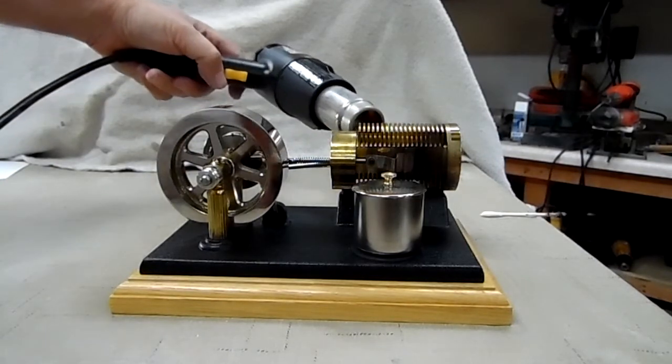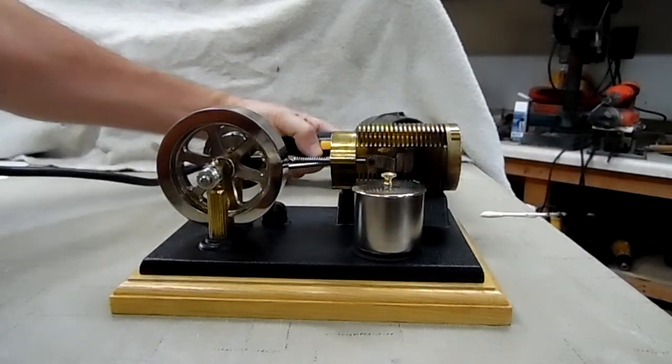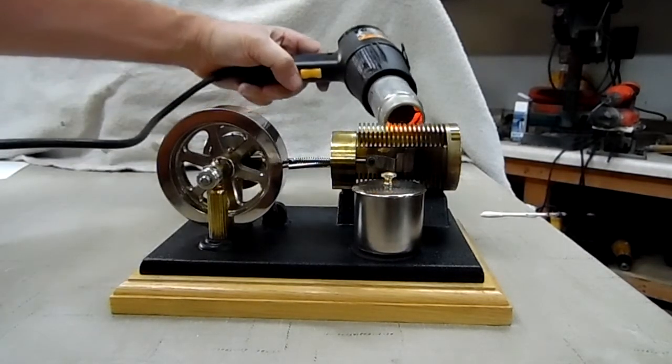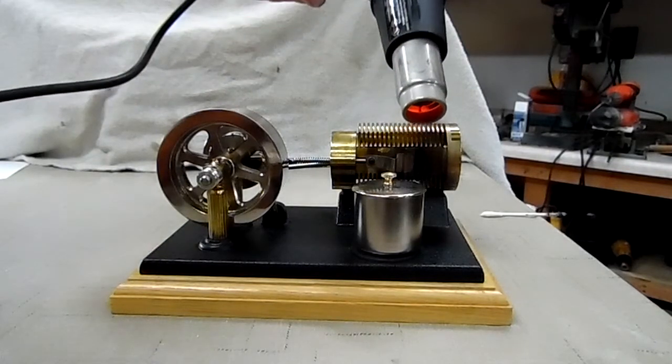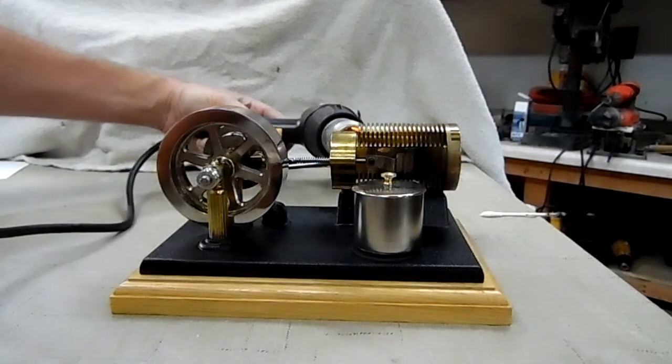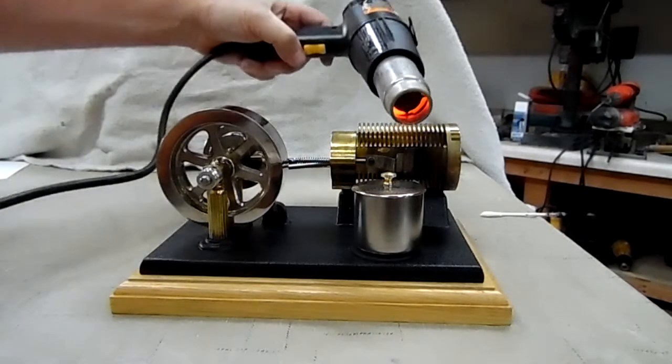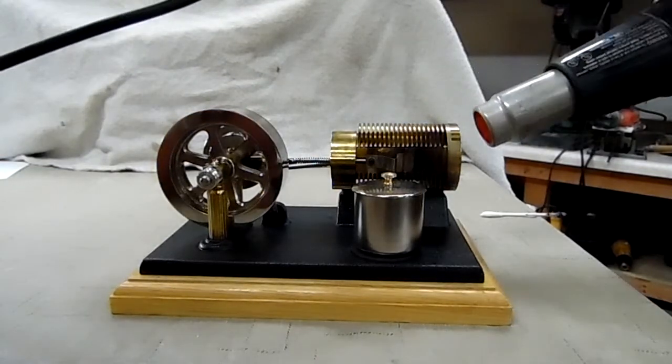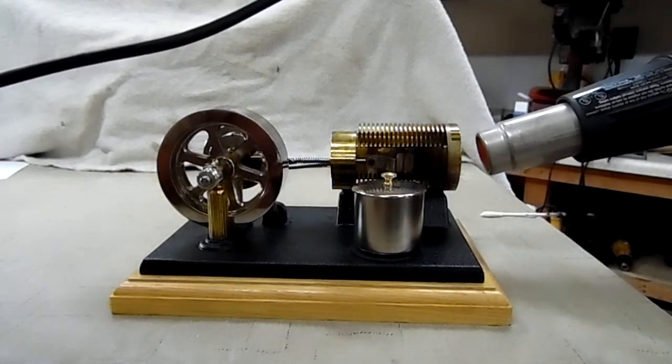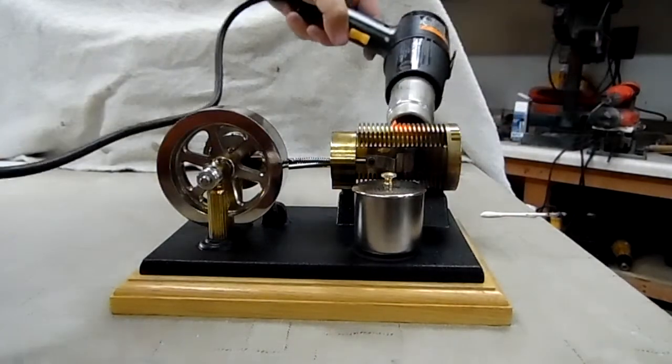I suppose a hairdryer would work as well but you'd probably have to double the time because this is a really intense heat. It doesn't take that much. So I always count about 30 seconds and I'm not counting now. Heat it all the way around. Brass will disperse the heat in a little while.